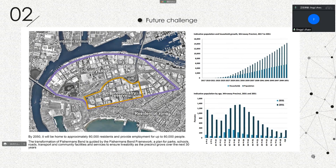As a future precinct, by 2050 it will be home to approximately 80,000 residents and provide employment for up to 80,000 people. The transformation of Fishermen's Bend is guided by the Fishermen's Bend Framework — a plan for parks, schools, roads, transport, and community facilities to ensure livability as the precinct grows over the next 30 years.